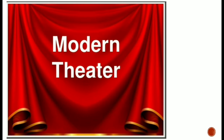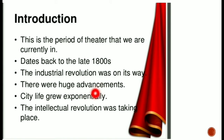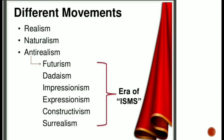Modern theatre is the period of theatre we are currently in; it dates back to the late 1800s. The industrial revolution was underway, city life grew exponentially, and an intellectual revolution was taking place. Different movements appeared in modern theatre — all the 'isms' were there: realism, naturalism, and anti-realism. Anti-realism includes futurism, dadaism, impressionism, expressionism, constructivism, and surrealism. This is for your general knowledge and is not mentioned in your textbook.